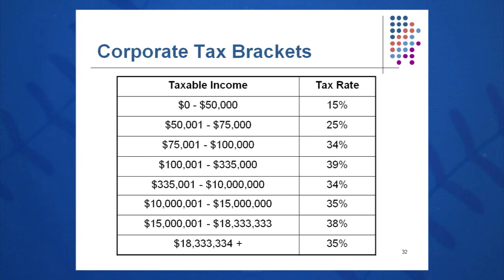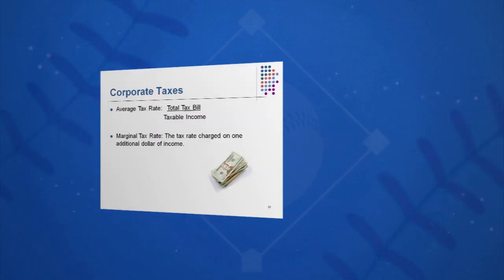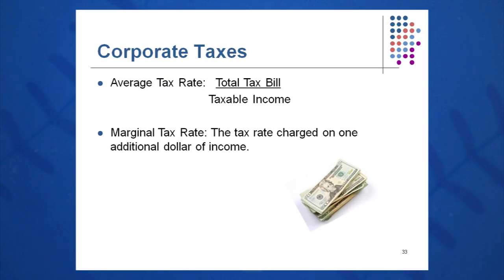But basically until you get above $18 million, you're going to pay mostly an increasing gradient, although in some brackets they decrease slightly — they go up, up, up, then down, down, then up again. The average tax rate across all these brackets is your total tax bill divided by taxable income.